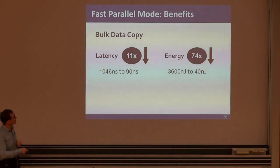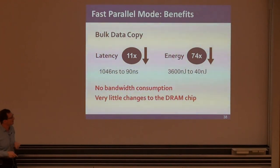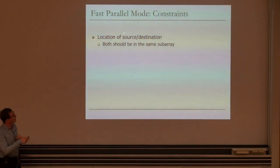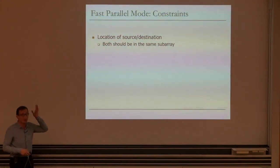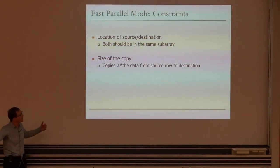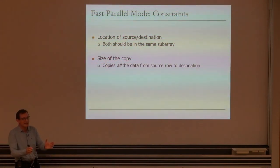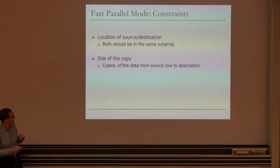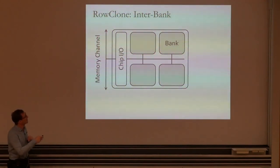So intra-subarray copy: activate source row, copy data to row buffer; activate destination row, disconnect source, connect destination, copy data from row buffer to destination. The paper evaluates this and shows significant latency reduction and significant memory energy reduction — no bandwidth consumption on the memory bus bottleneck, very little changes to the DRAM chip. Constraints: source and destination must be in the same subarray; copy granularity is an entire row — you cannot copy at finer granularity. If you want to copy one kilobyte, you must copy the full row, typically four kilobytes.